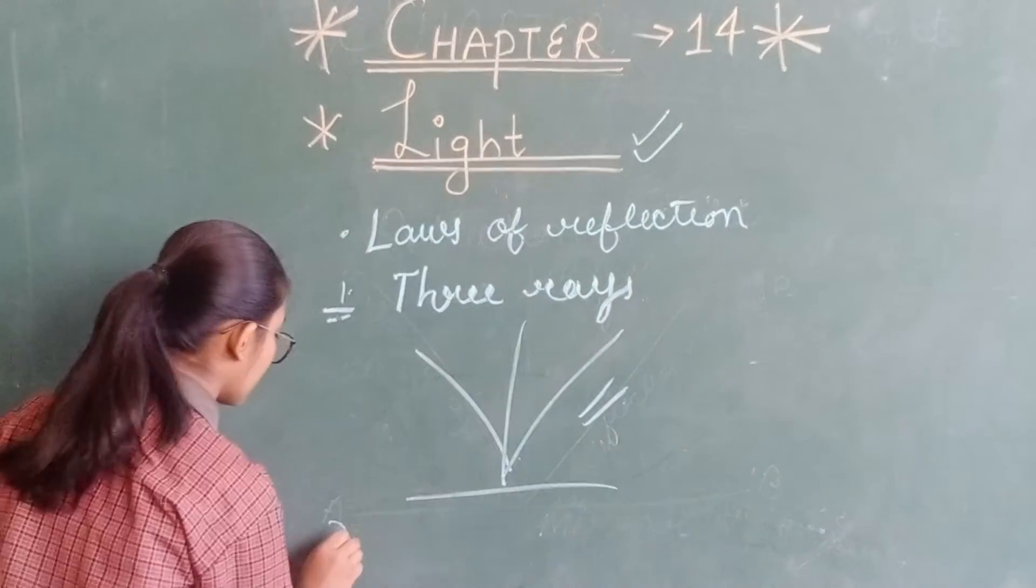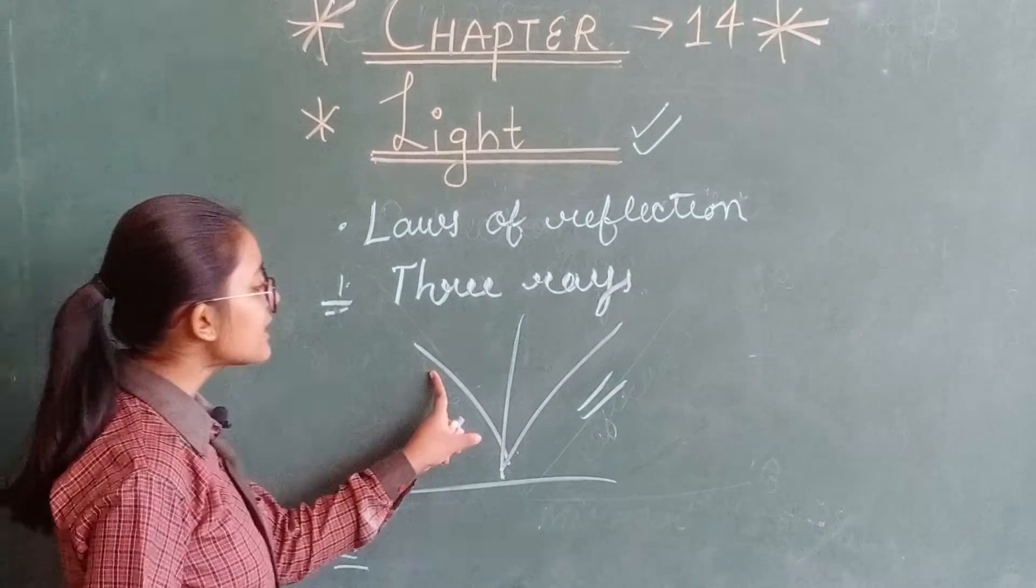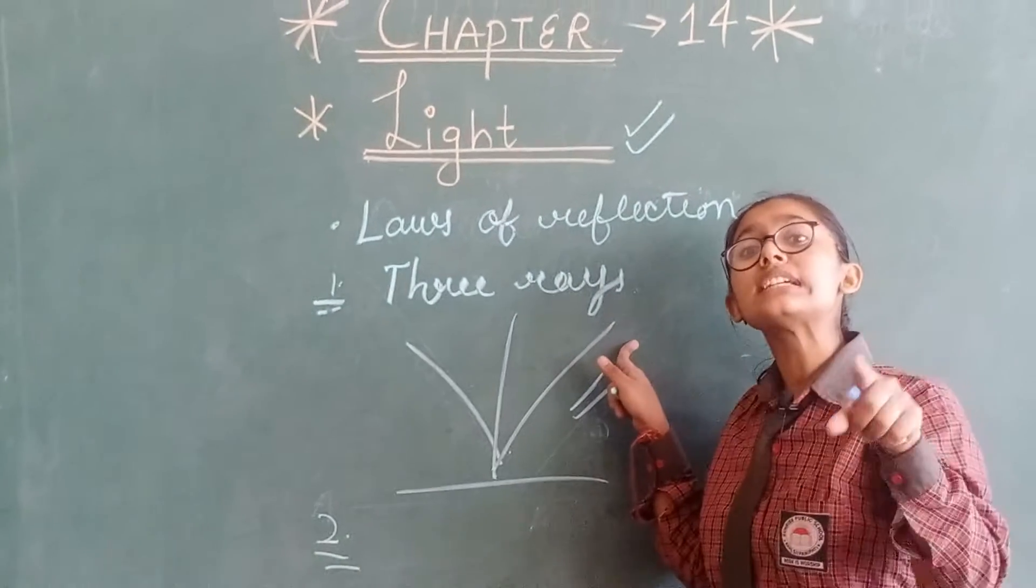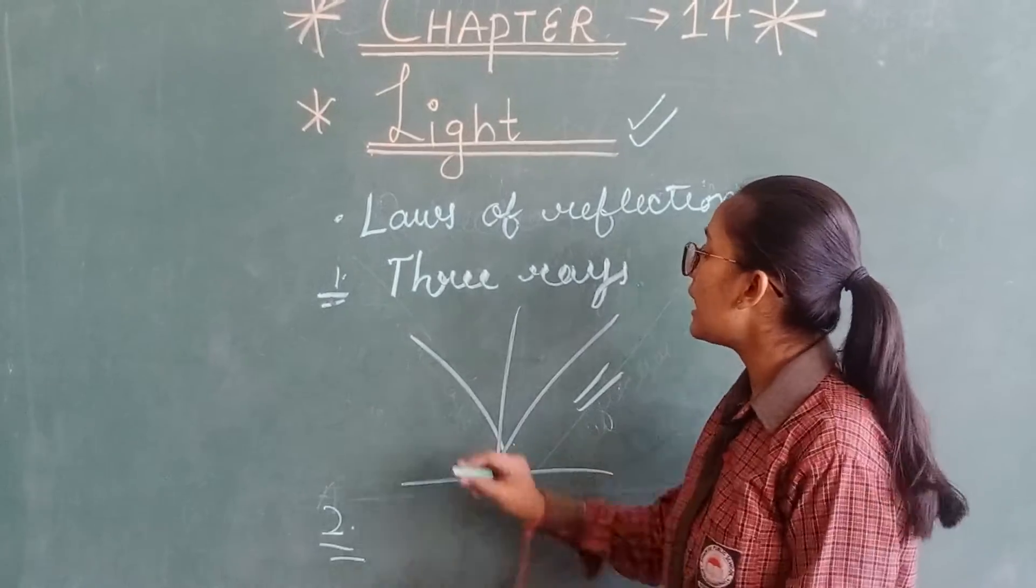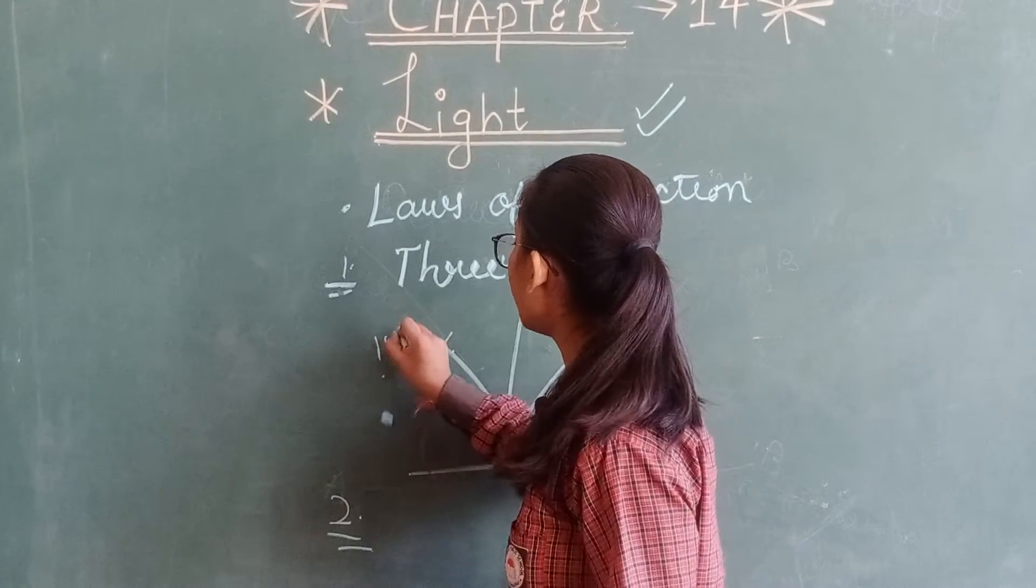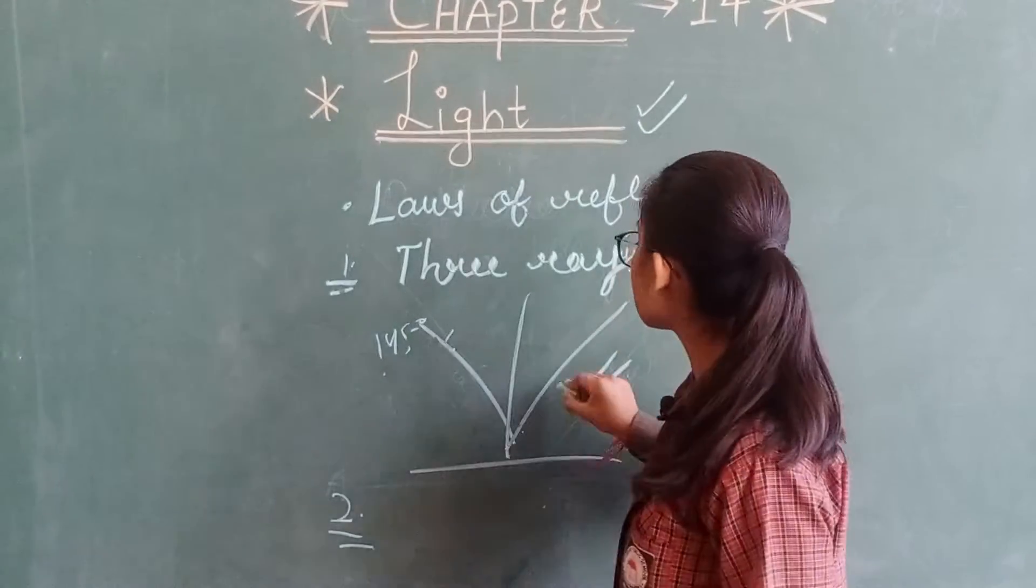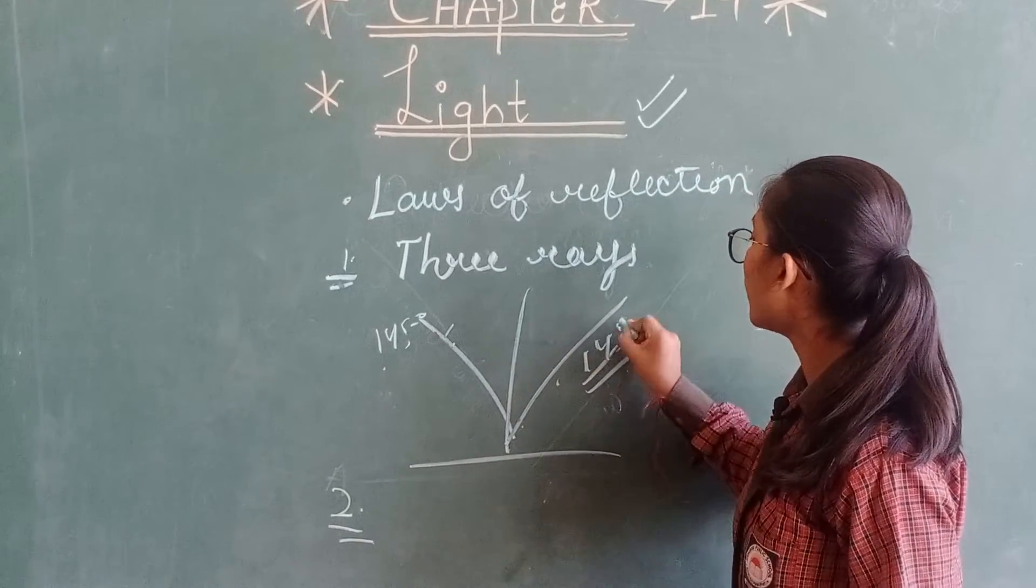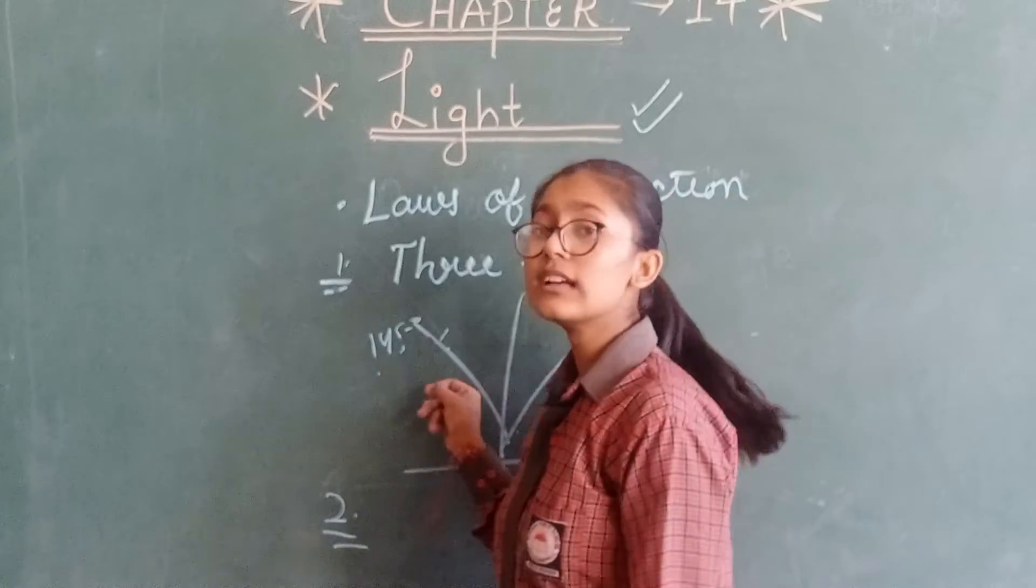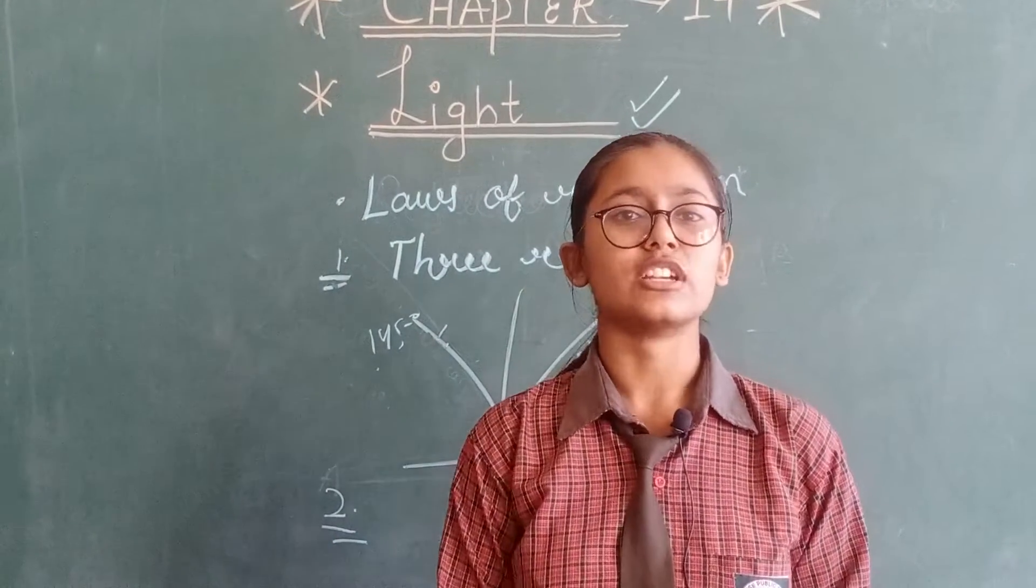Second law is the incident ray and the reflected ray will be at the same angle. It means that if the incident ray is at 45 degrees, then the reflected ray will also be at 45 degrees. This is called the law of reflection.